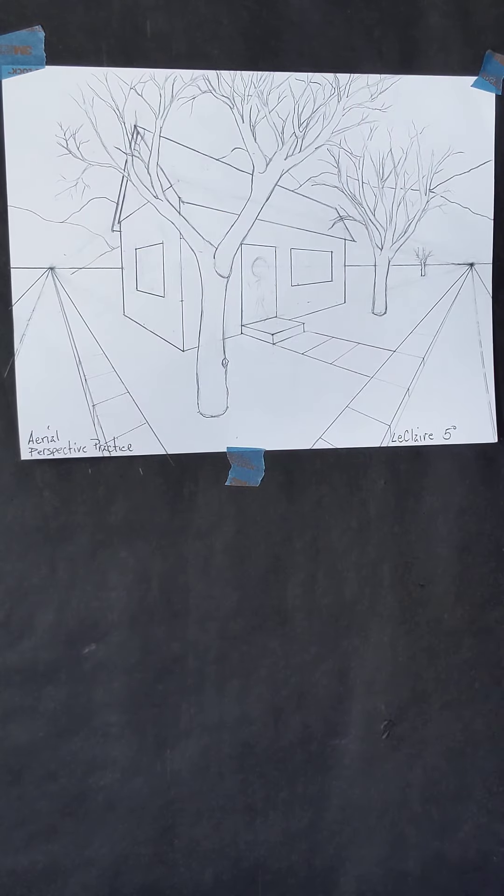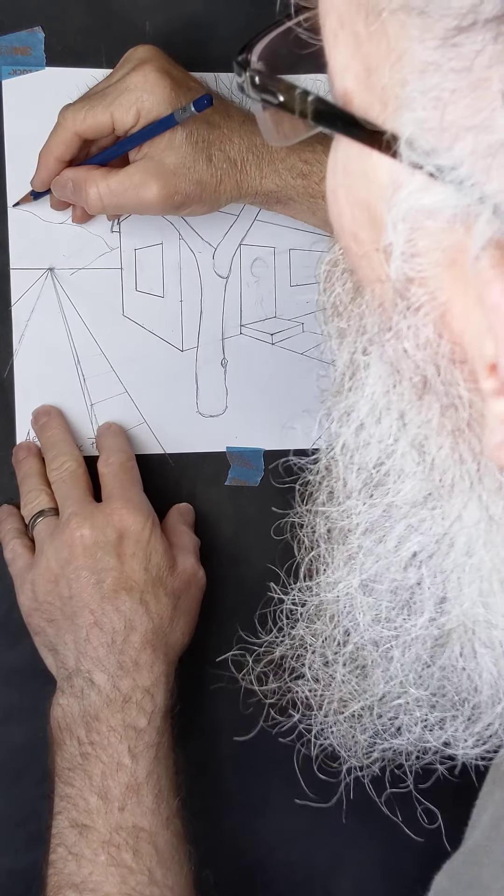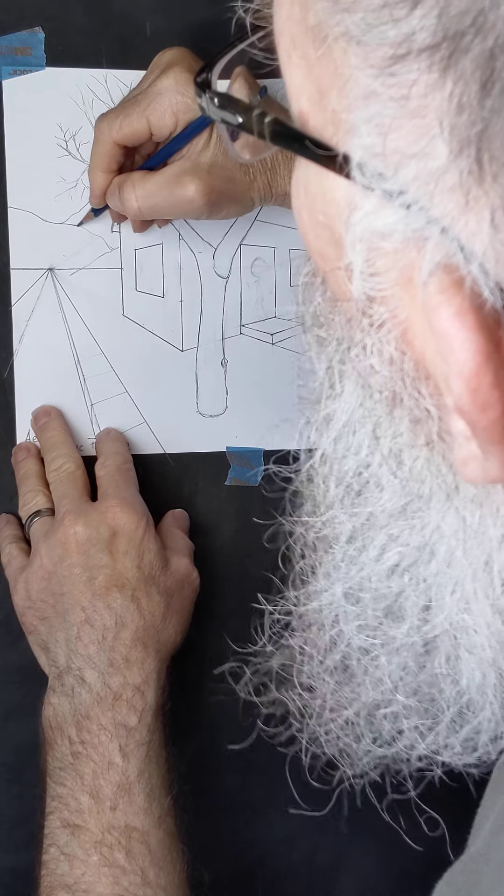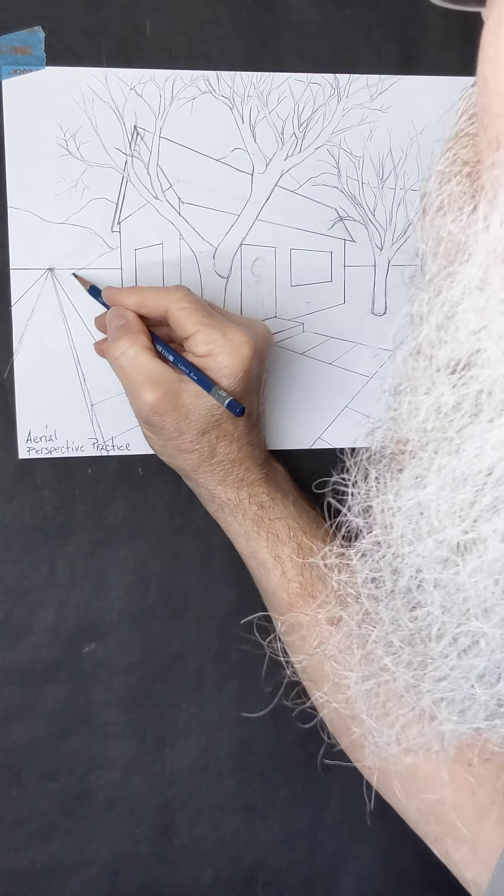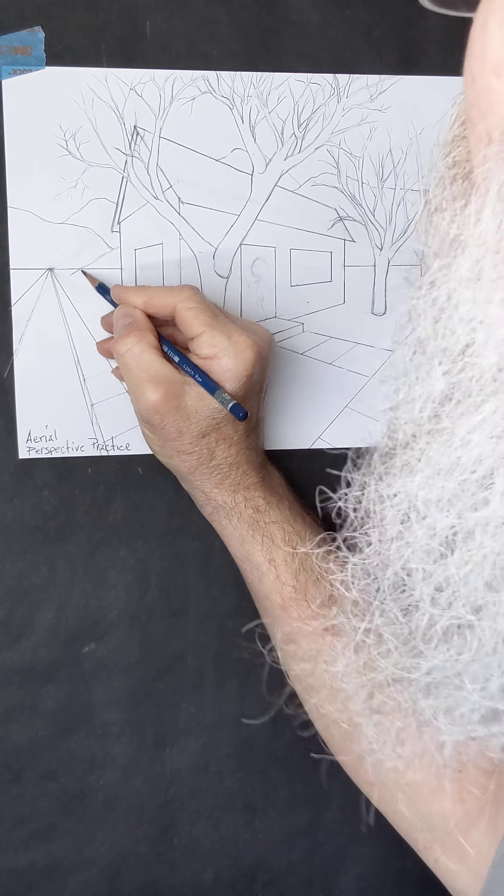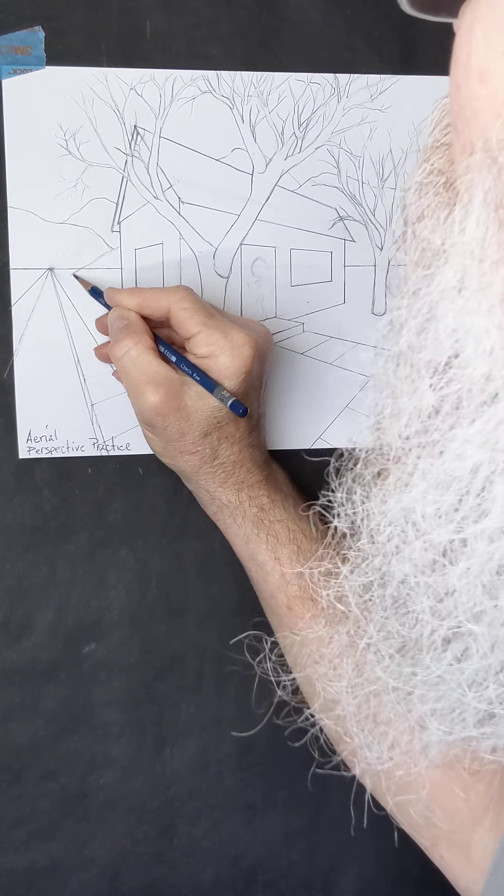But you know sometimes there are things that happen before that. Now where this mountain is interrupted by this, this is kind of maybe the foothills. This line needs to kind of go away and then the foothills just kind of merge into it.